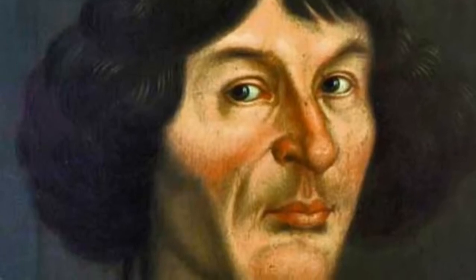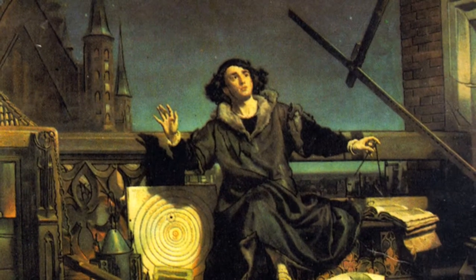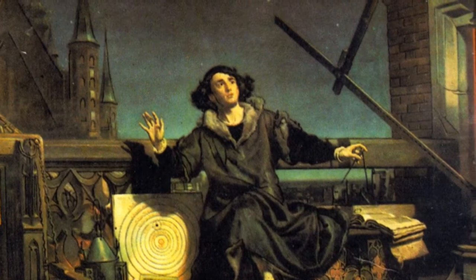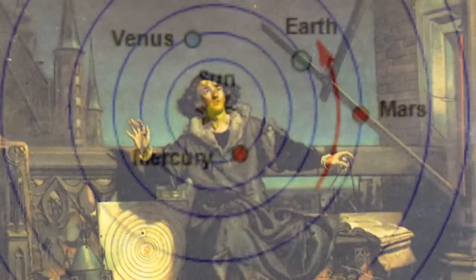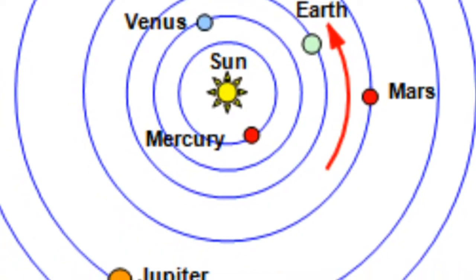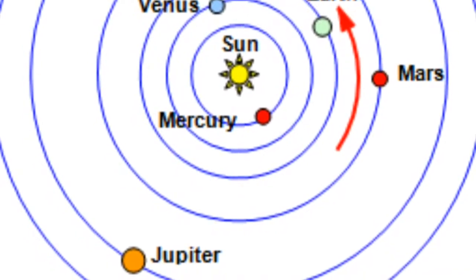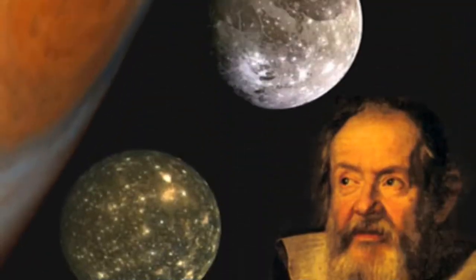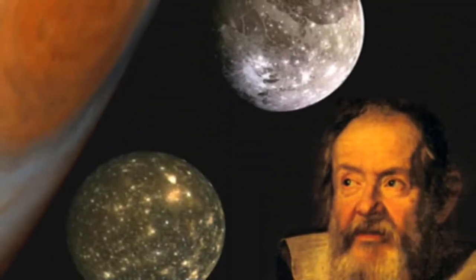This guy is Copernicus. Galileo is the one who became devoted to Copernicus's theory in the early 17th century.